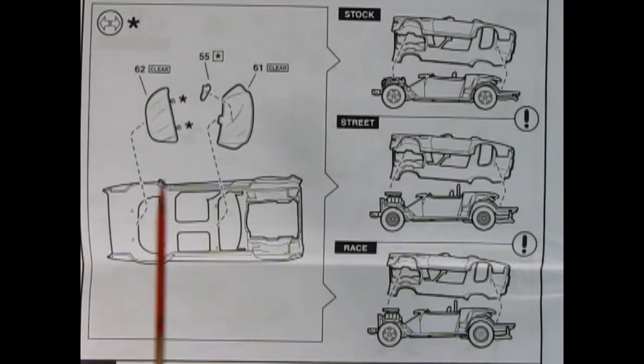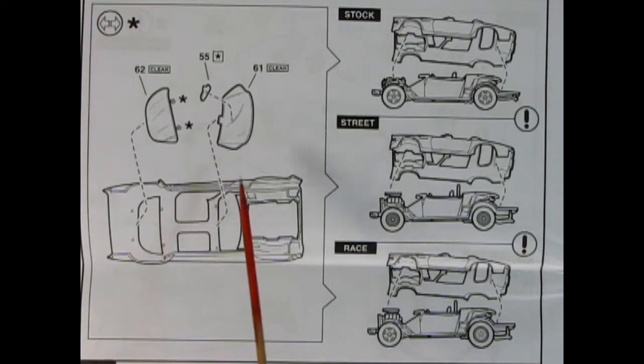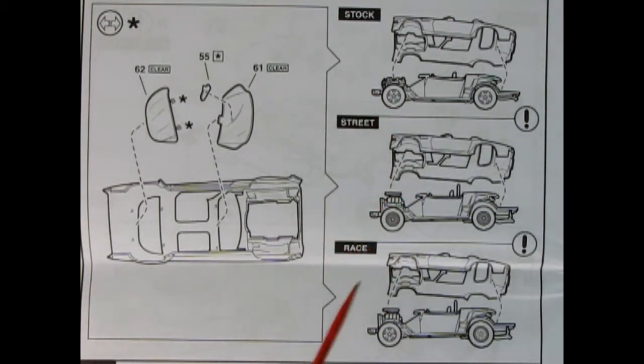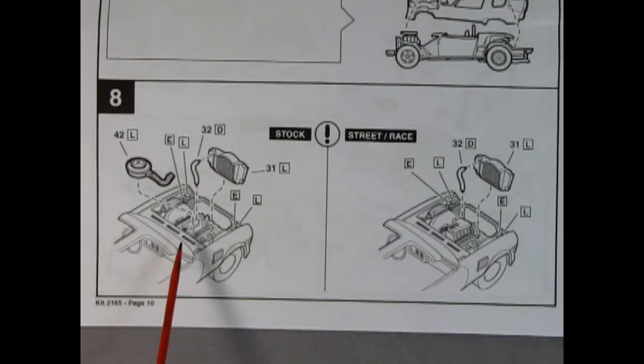Here we have the rear window being glued into place as well as the front window and our rear view mirror. Then our body drops into place on the stock, street, and race chassis depending on how you built the earlier steps. Panel 8 shows our air cleaner being installed on top of our engine block for the stock version and our upper radiator hose and the radiator wall and radiator all drop into place. For the street race version since the blower is in there we just need to put in the radiator hose and the radiator.